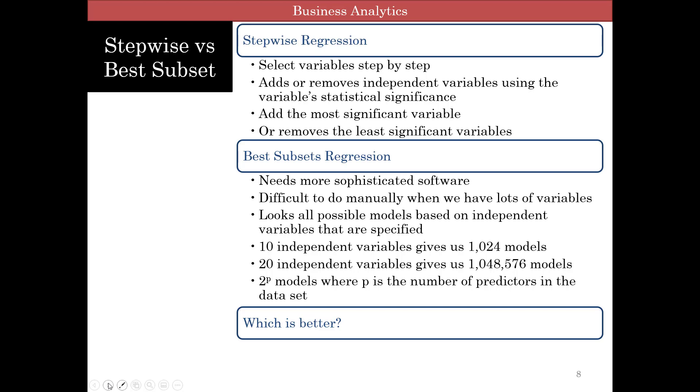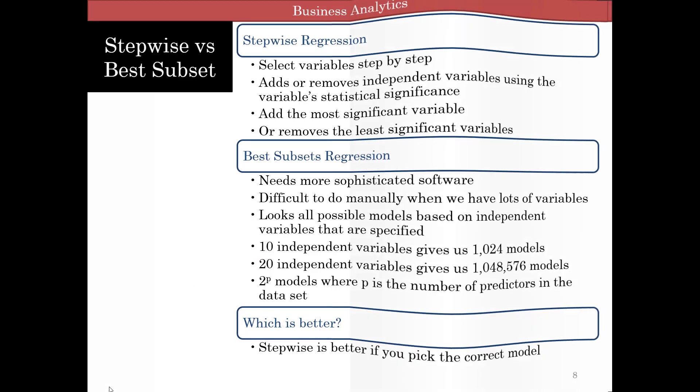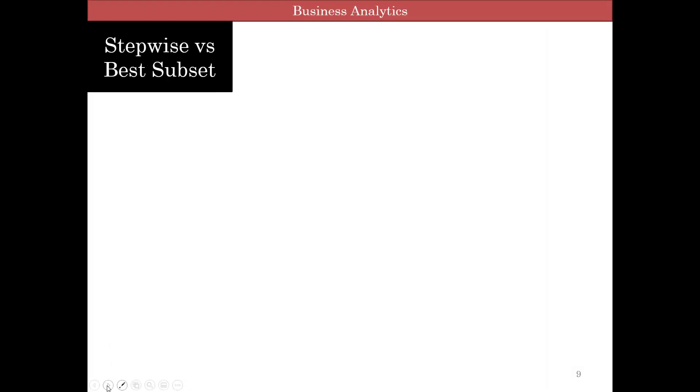So which is better, stepwise regression or best subsets? Now for your class, you're going to use stepwise because we don't have algorithms which can do this for us. But which is better? So stepwise is better if your focus is to pick the correct model. Because remember best subsets, the more number of models you have, the larger false positives are possible. So stepwise is definitely better. You'll do a less number of regression tests.